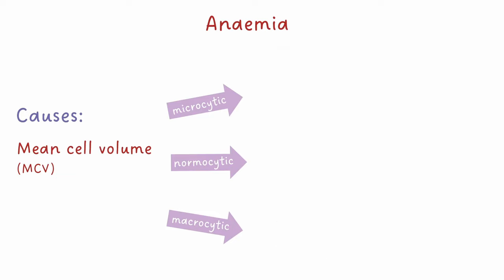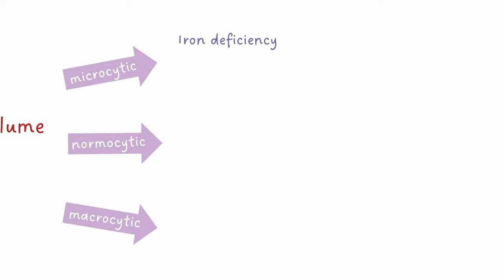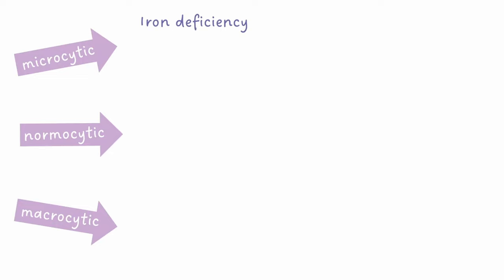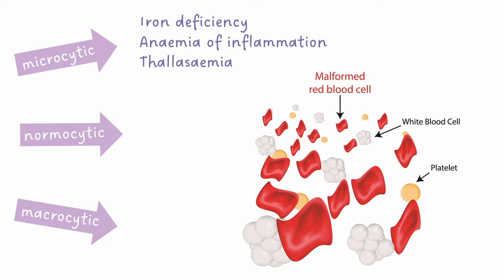Microcytic anaemias are often caused by iron deficiency, which could be due to blood loss, coeliac disease, or poor dietary intake. Anaemia of inflammation is where a chronic inflammatory condition lowers haemoglobin over time, and this can also cause a normocytic anaemia. Thalassaemia is an inherited condition where there is a reduction in the amount of haemoglobin produced.